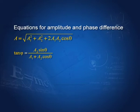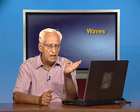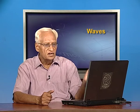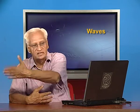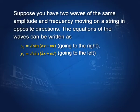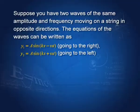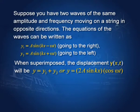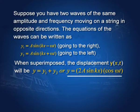We can carry out a similar analysis if the two waves move in the opposite directions — the principle of superposition applies there also. Suppose we have two waves of the same amplitude and frequency moving on a string in opposite directions. Then we can write y₁ = A sin(kx − ωt) and y₂ = A sin(kx + ωt), where the plus sign is for motion in the negative x direction and the minus sign is for motion in the positive x direction. We superimpose them by adding displacements: y = y₁ + y₂ = 2A sin(kx) cos(ωt).